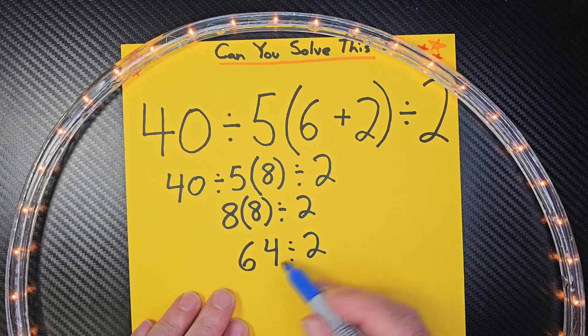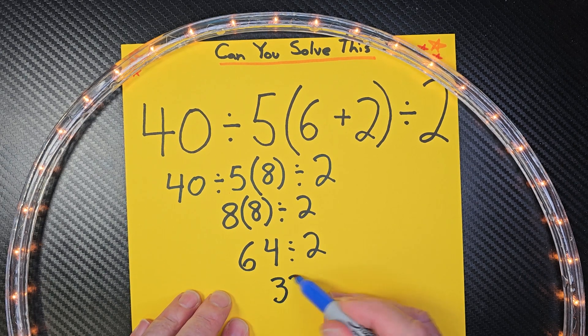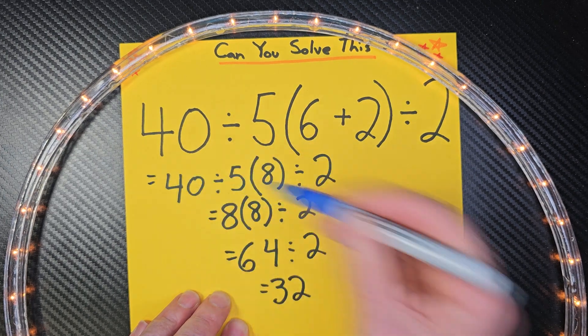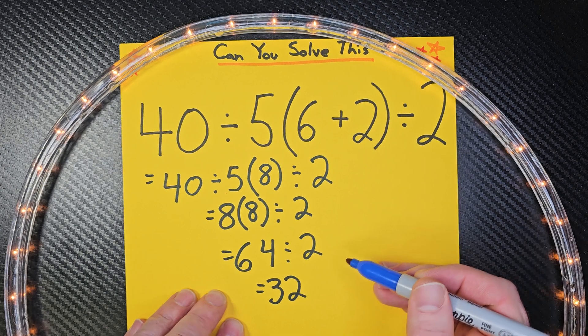Do you know what that is? Thirty-two. So we have 32 for our answer. How'd you do? I know you did great.